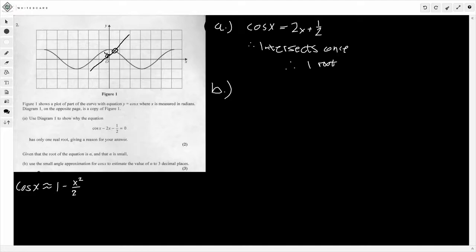Part B, a little bit trickier. We have a small angle approximation. It's nothing too intense. But, we're going to use this equation that we have again. We're given that the root of this equation is alpha, and that alpha is small. Now, we have to estimate the value of alpha to three decimal places. You're given the small angle approximations in your formula book, but I have written it down here just for clarity. So, cos x is approximately 1 minus x squared divided by 2.